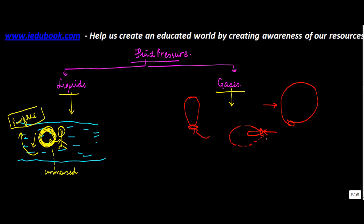As you start pumping air, the air keeps on expanding the surface of the balloon. It keeps expanding until it reaches a particular stage — if you add more than this it will burst, but otherwise it keeps expanding. That's the pressure which a gas or air causes on the balloon, and this is known as gaseous pressure.